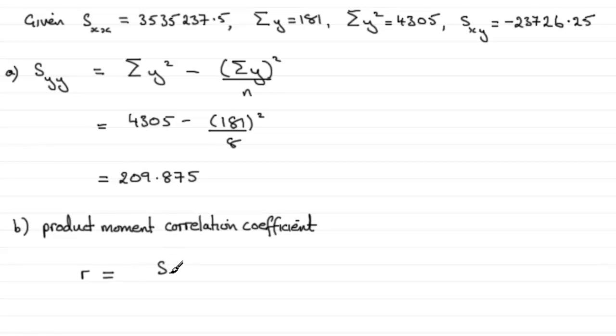...equals s_xy divided by the square root of s_xx multiplied by s_yy. This is a formula that you'll generally find in your formula book, but I would still encourage you to try and remember it though.